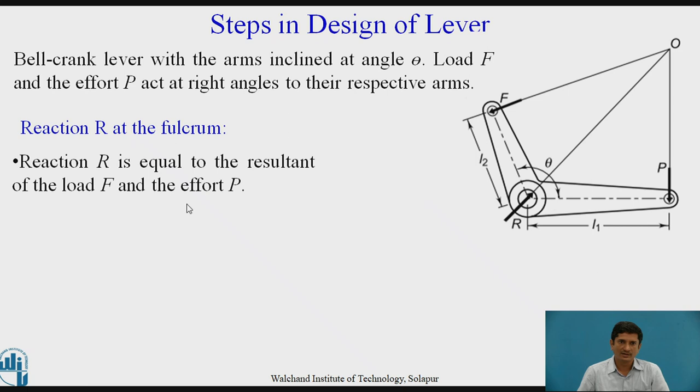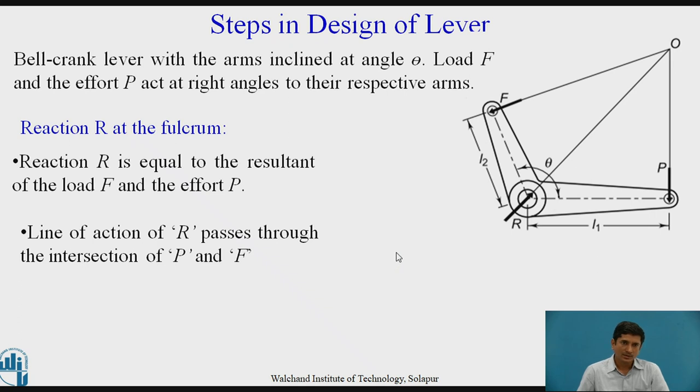Reaction at the fulcrum is equal to the resultant of F and P. The reaction at fulcrum is the resultant of F and P. Which equation is to be used? We can think upon it. The line of action R passes through the intersection of P and F. Line of action of R should pass through point O, which is the intersection of extension of line F and P.